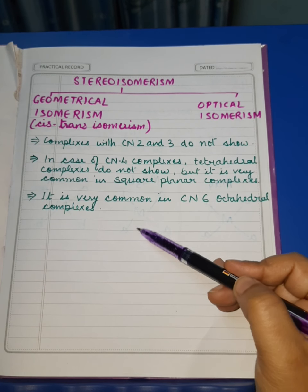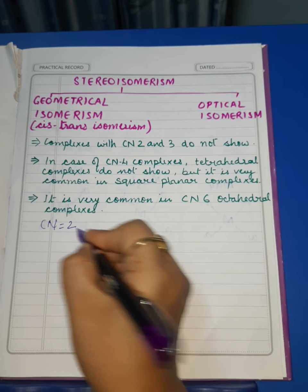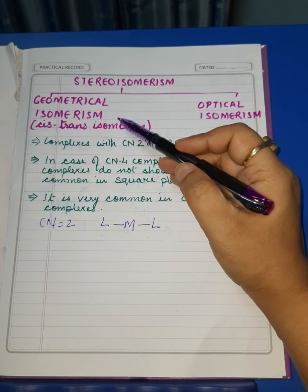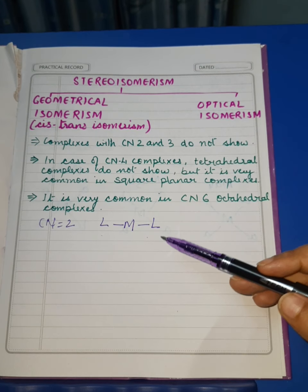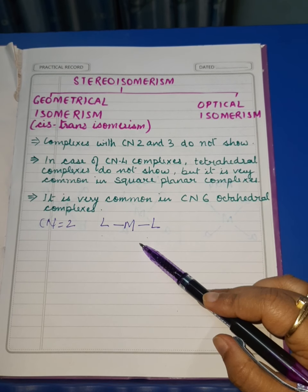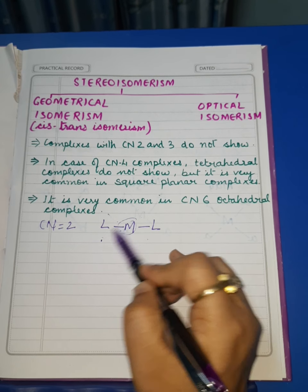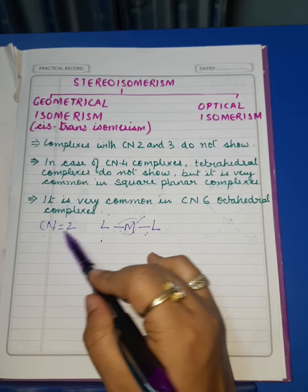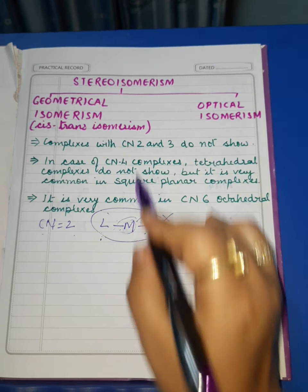We need to understand these three points properly. Coordination number 2 means the central metal atom or ion is bonded with two ligands. For any compound to have geometrical isomerism — similar conditions as in organic compounds — at least two different configurations should be possible. Since CN2 has a linear structure, it cannot show geometrical isomerism.